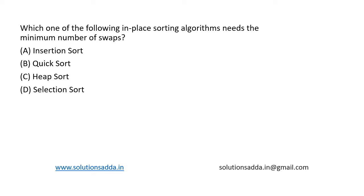The correct answer is option D, selection sort. Selection sort is an in-place sorting algorithm having the minimum number of swaps. It works on a greedy approach and takes order of n swaps for n elements.